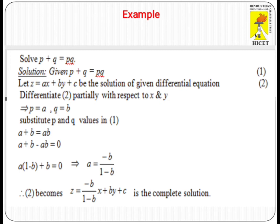Differentiating partially with respect to X and Y, P equals A and Q equals B. Substituting P and Q in the given equation, we get A + B = AB.